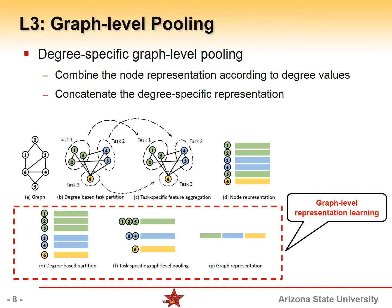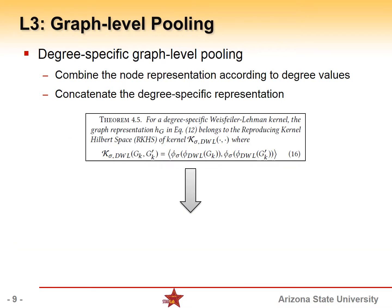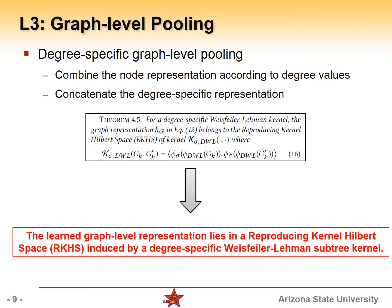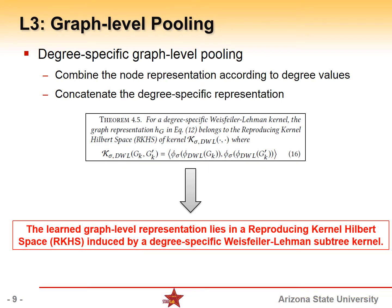And we also provide a degree-specific graph-level pooling strategy in order to combine the node-level embeddings into a final graph-level representation. We theoretically show that the learned graph-level representation lies in a reproducing kernel Hilbert space induced by a degree-specific Weisfeiler-Lehman graph kernel.